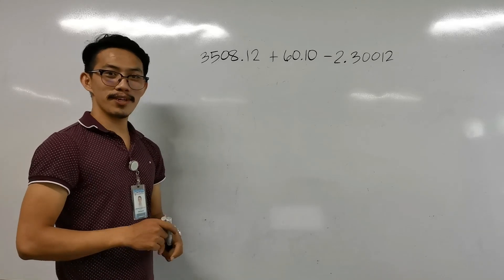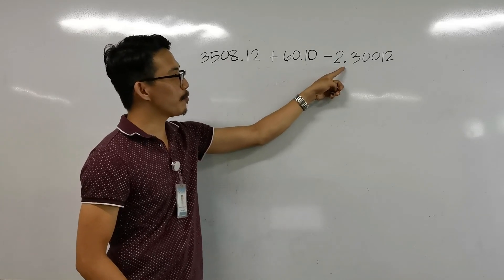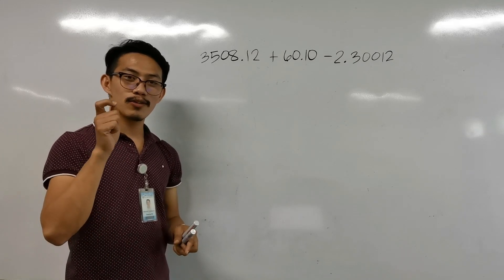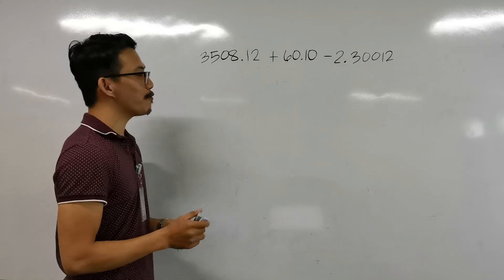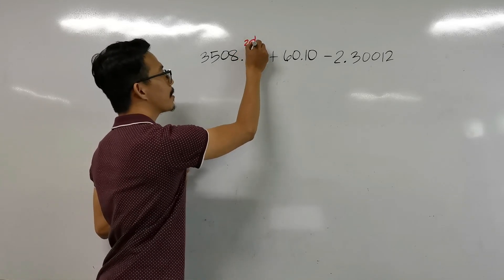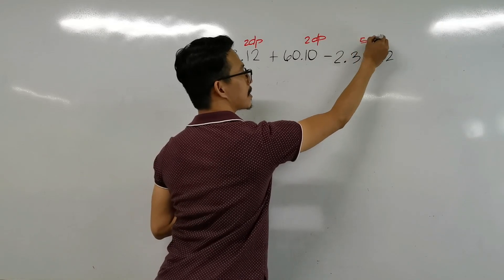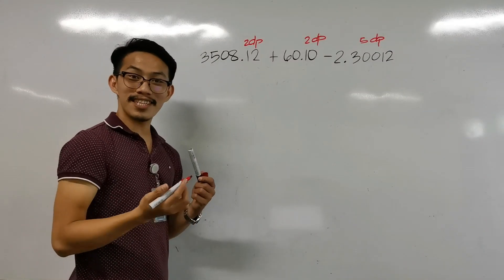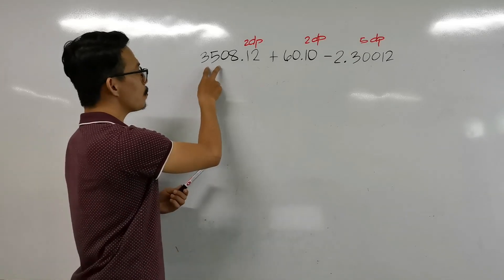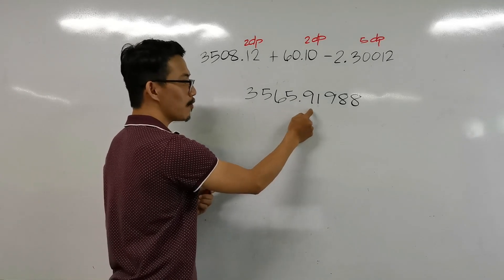Let's have another problem with addition and subtraction. We have 358.12 plus 60.10 minus 2.3002. We only have addition and subtraction, so we follow the least precise measurement rule. Let us check if we can use the shortcut by identifying the least number of decimal places. Solving with a calculator gives us 3565.91988.